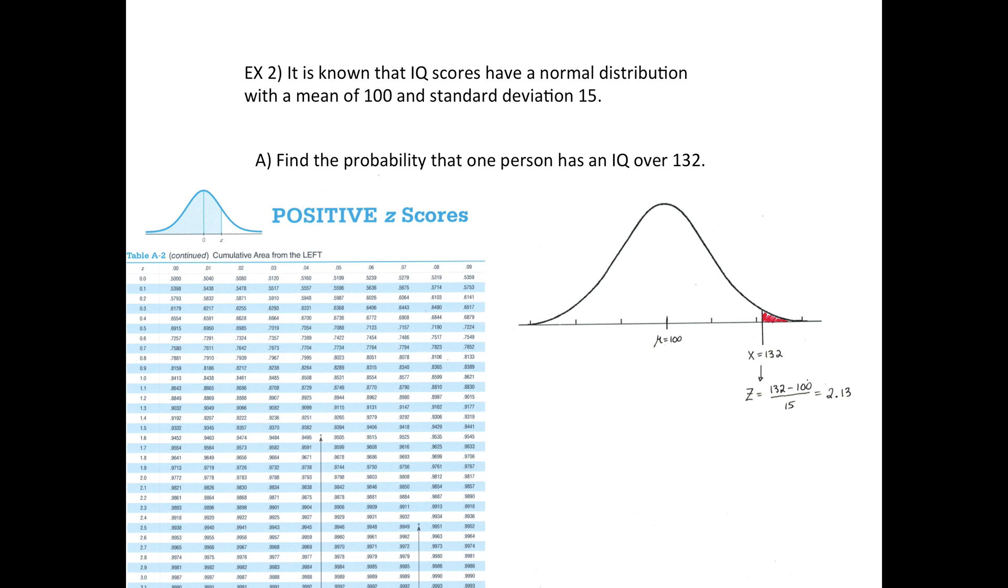Then look up 2.13, which would be right here: 0.9834. So that means the left side is 0.9834. If you do 1 minus that, you'll get 0.017, or in other words, 1.7 percent of people are considered to be geniuses.